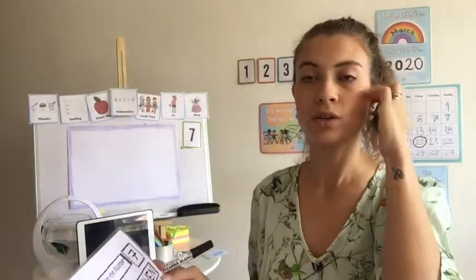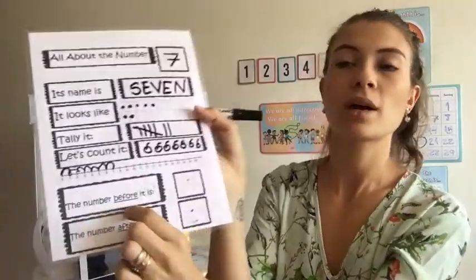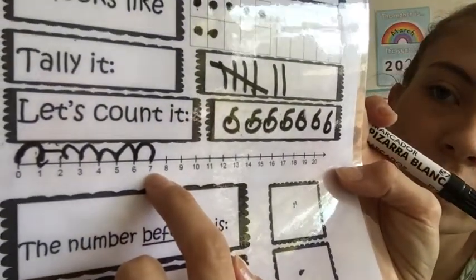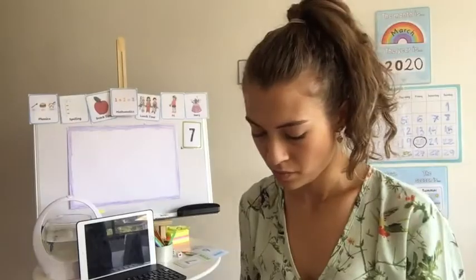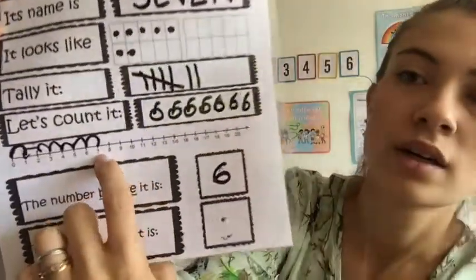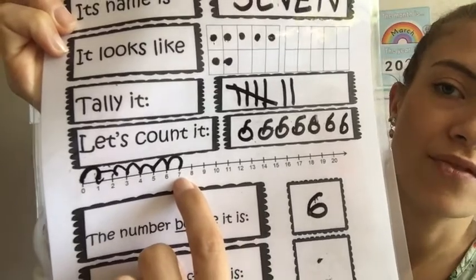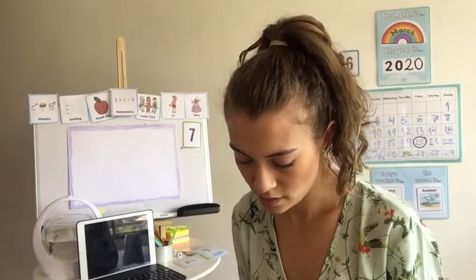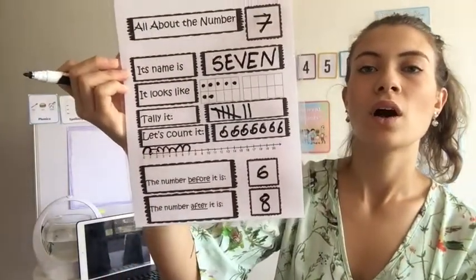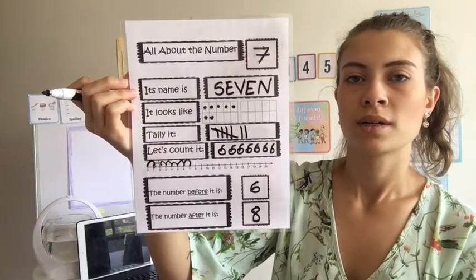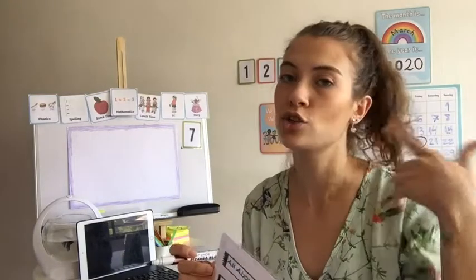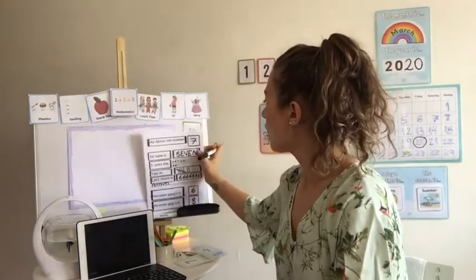Here, with the number line, you can recognize which number comes before the number 7. Number 7 is here — which number comes before? Number 6. What is the number coming after number 7? Number 8. We did all about the number 7. It's getting easier, because as much as we do it, it gets easier and more familiar for us.